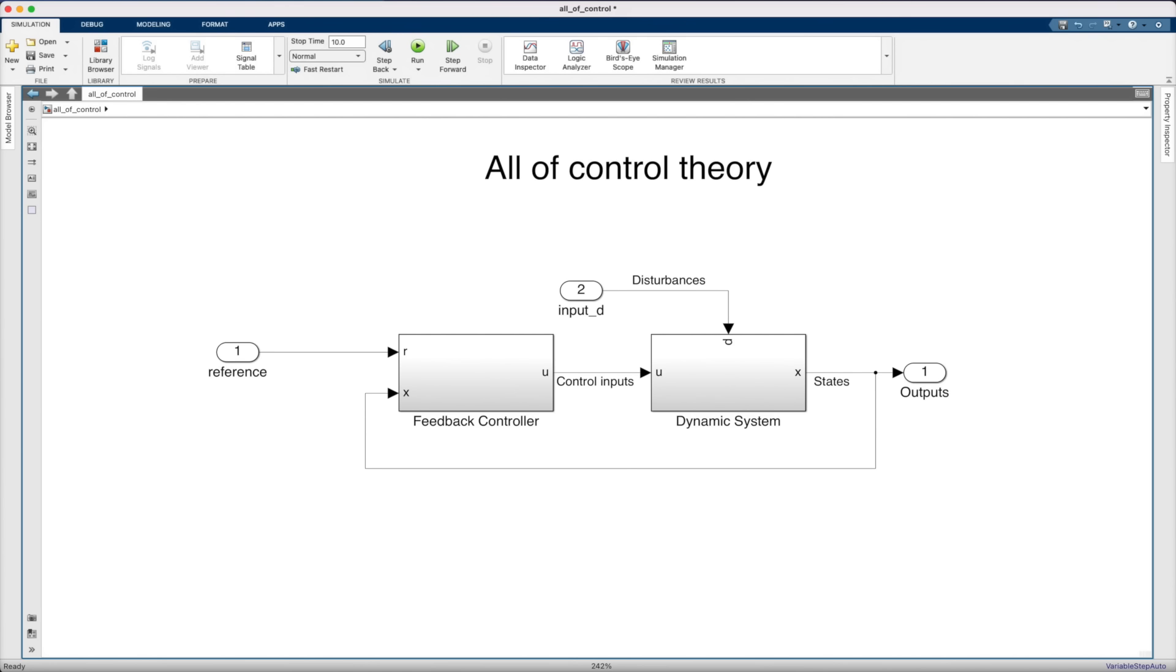So feedback control is a self-correcting mechanism. And I like to think of feedback as a hack that we have to employ due to our inability to perfectly understand the system and its environment. We don't want to use feedback control, but we have to.